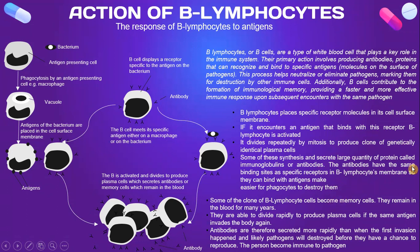Some of the clones of B-lymphocyte cells become memory cells. They remain in the blood for many years and are able to divide rapidly into plasma cells when the same antigen enters the body again. Antibodies are therefore produced more rapidly than when the first invasion happened, and the pathogens are likely destroyed before they have a chance to reproduce. The person becomes immune to that pathogen.